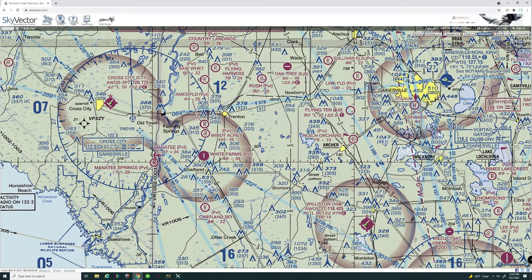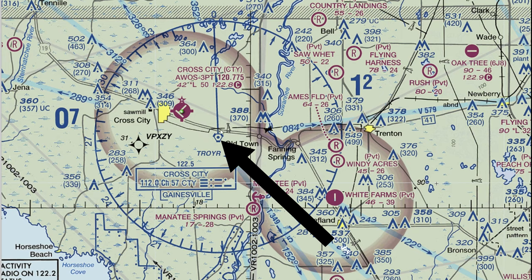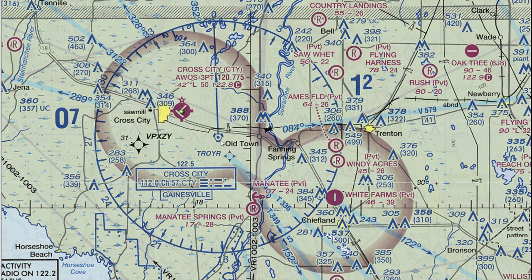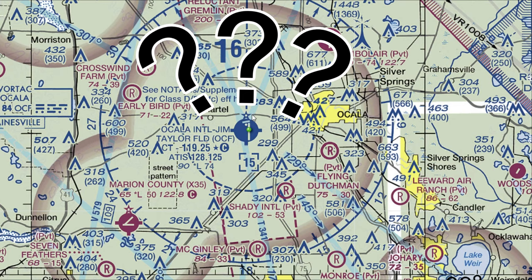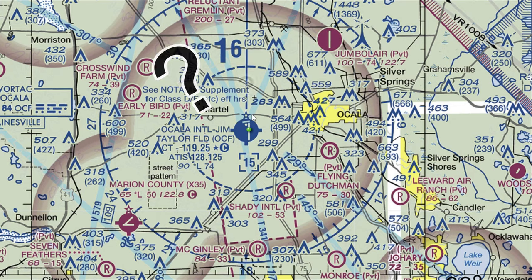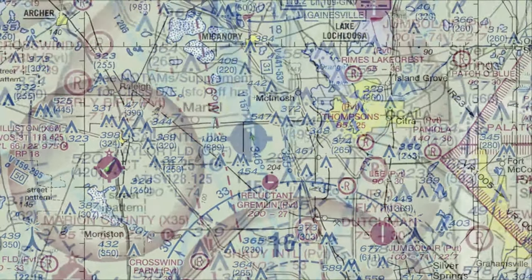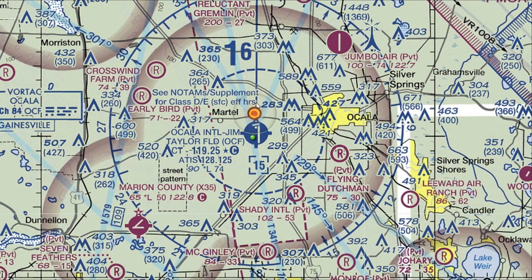Now I want to show what VOR symbology looks like when it's not next to the runway — in this case, the VOR is out here in the middle and the symbology looks a bit different. The little star right over top of the airport indicator tells you there is a lighted beacon at this airport, and it shows you the location of that beacon, which can help while you're flying in.